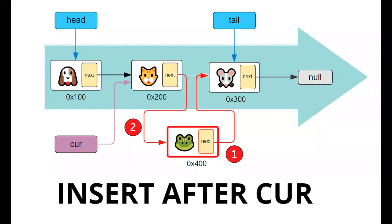Hello everyone, welcome back. This is Christian. In this video, we're going to insert a new node after the current node. This operation requires that we traverse the list starting from the head, and once we find the node that we want to insert after, then we'll do this operation. The pointer here points to the current node that matches the key. Let's say we're looking for a cat and we want to insert a node after the cat — then this is the operation that takes place.